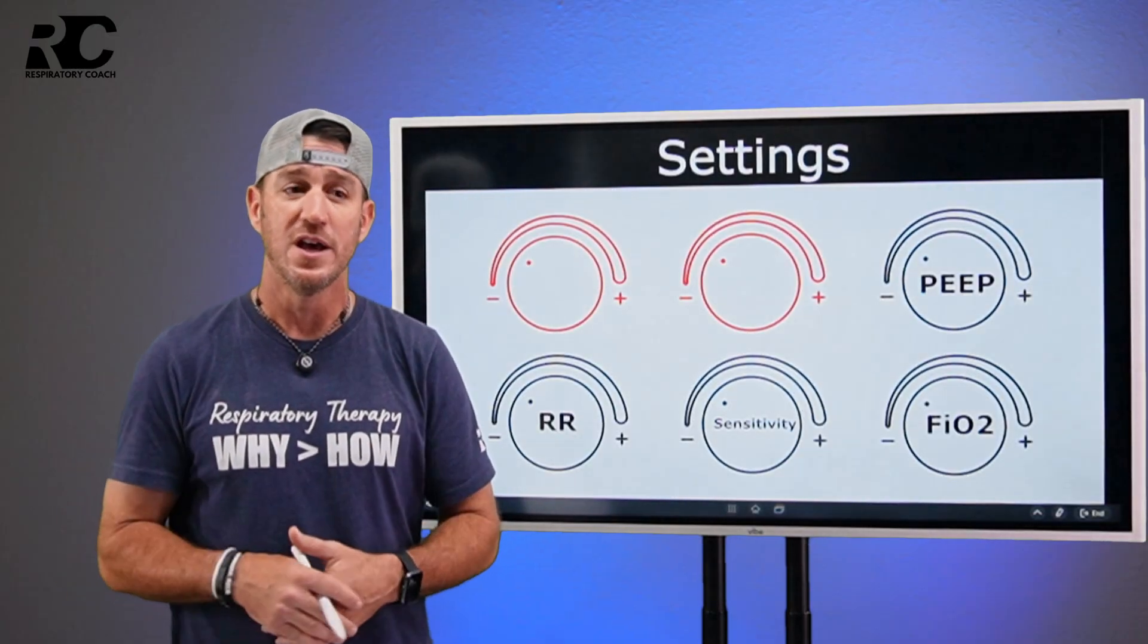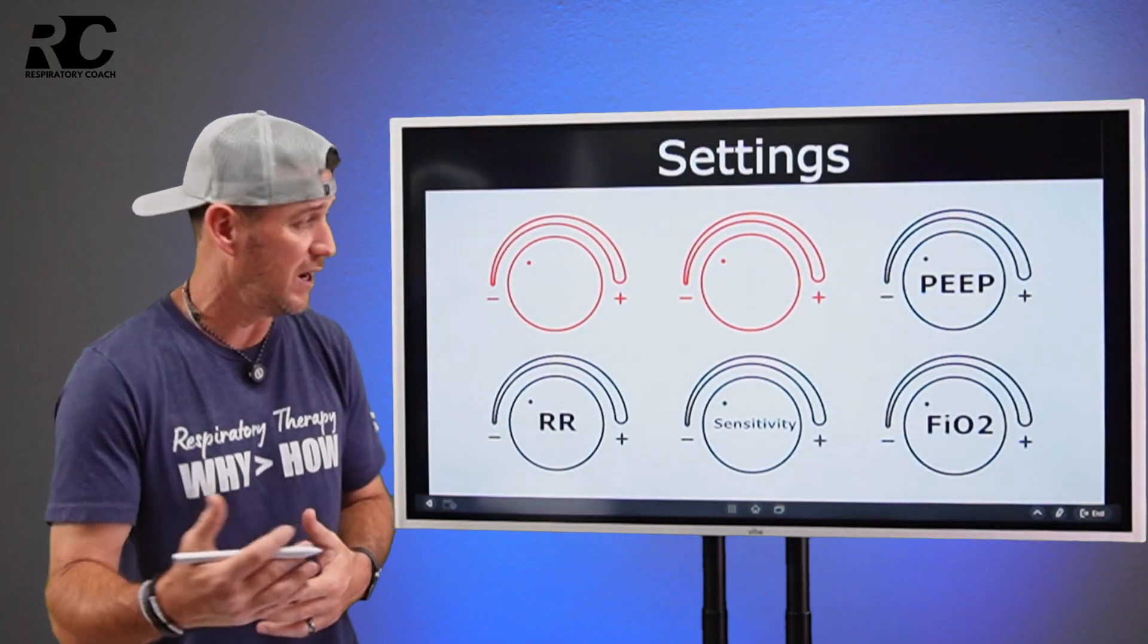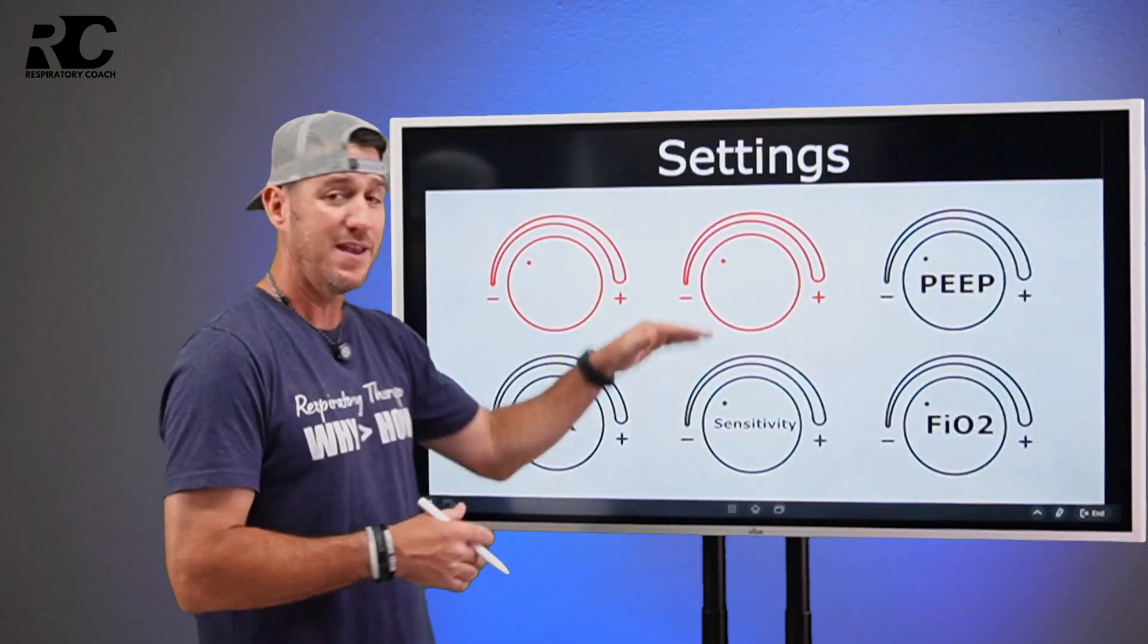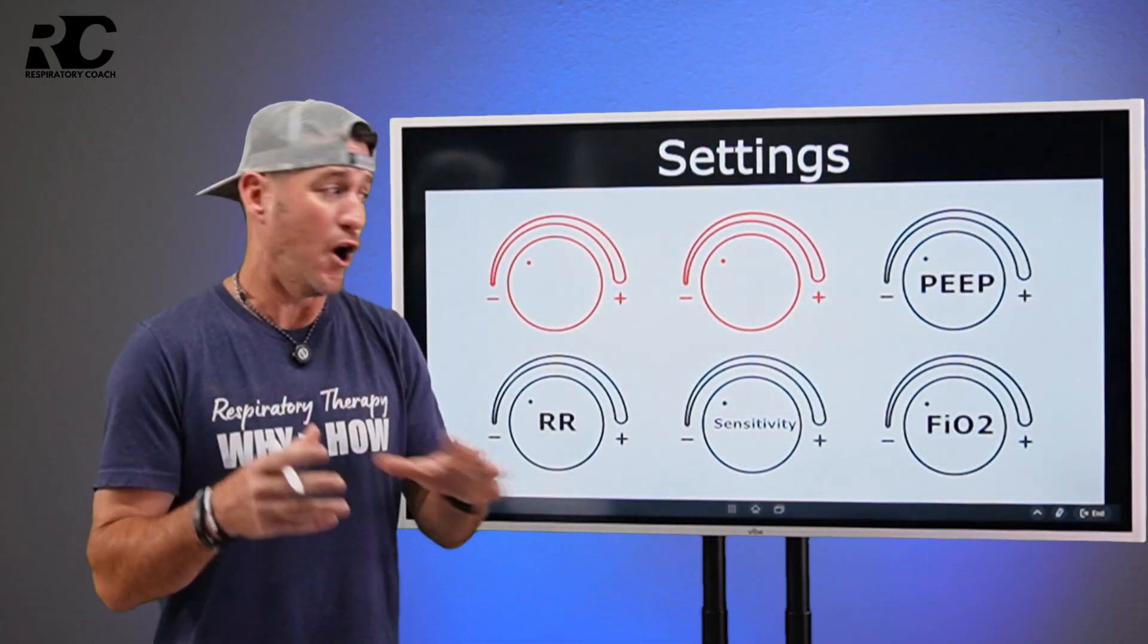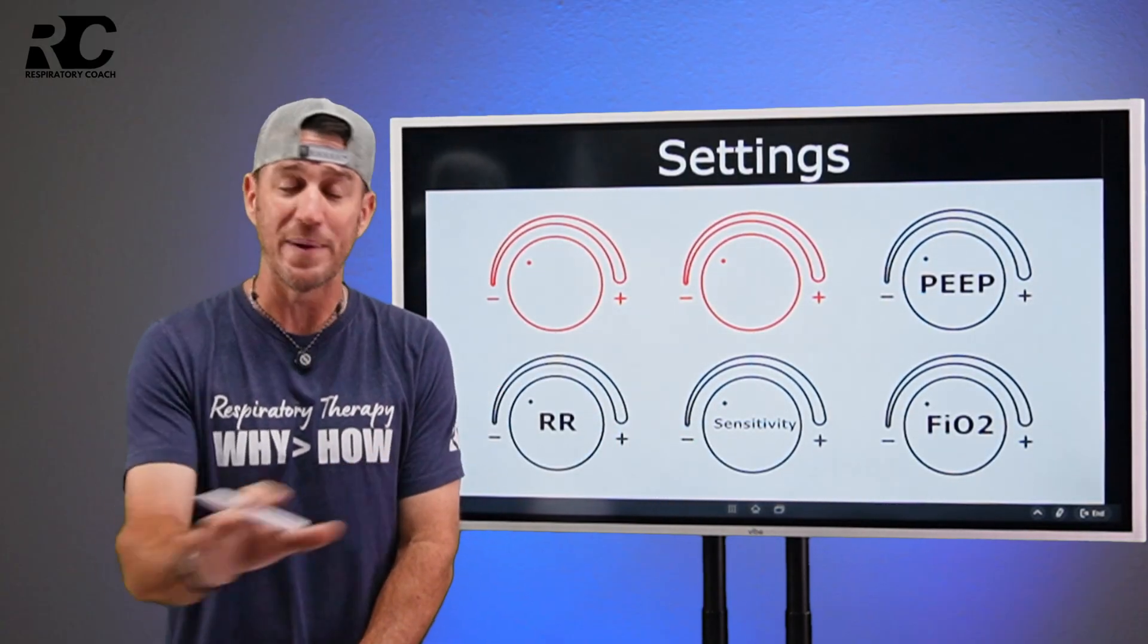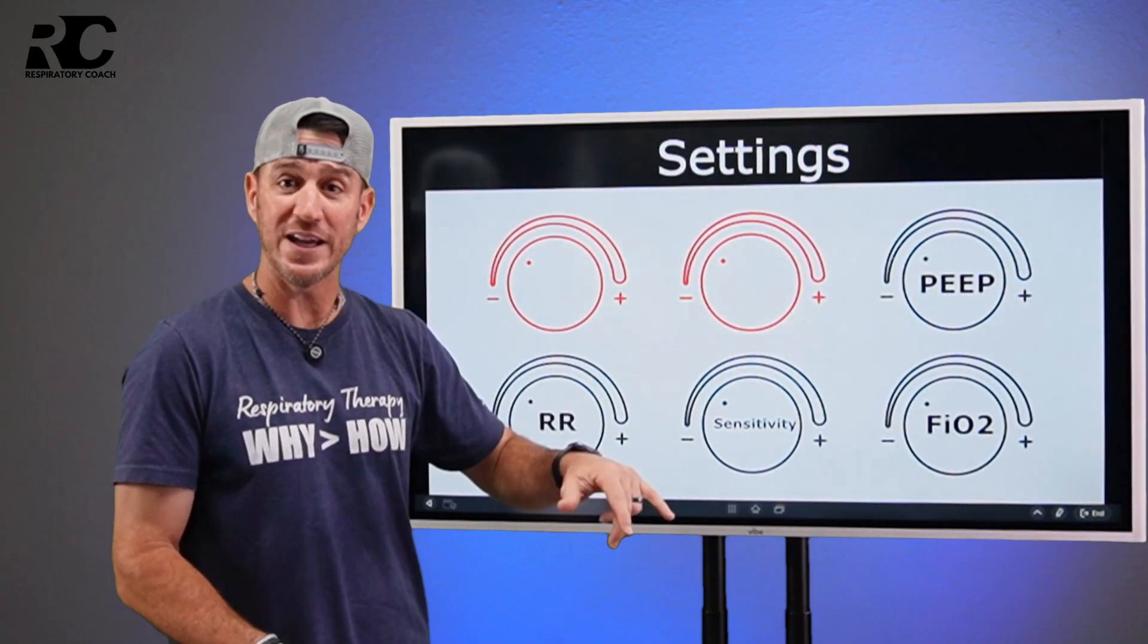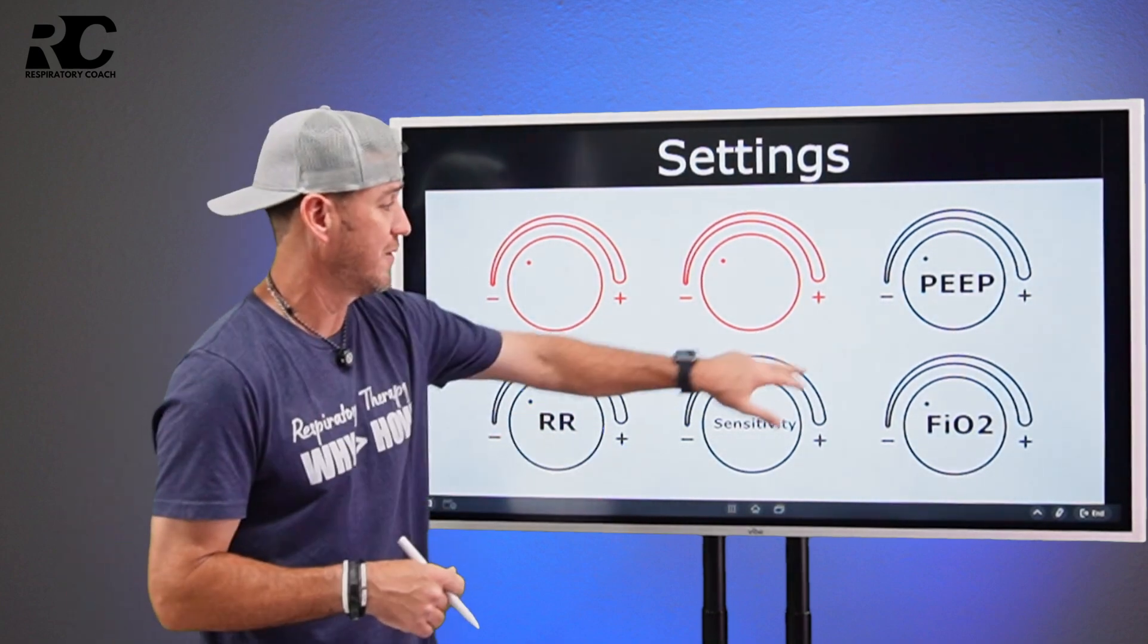So you're going to see PEEP in a lot of your basic modes of mechanical ventilation. Now, when you get into advanced modes, you may see PEEP expressed slightly differently, but it's there in most modes. Now that leaves these two. And the reason I did it like this is I want you to realize that all of these four, they apply to all basic modes of mechanical ventilation. These two will switch depending on which mode you are in. So let me show you what I'm talking about.